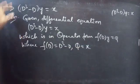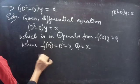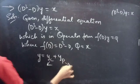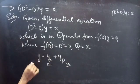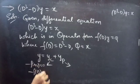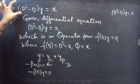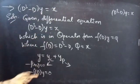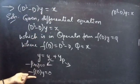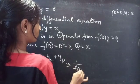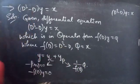We need to find the general solution, given by y = yc + yp, where yc is the complementary function and yp is the particular integral. We find yc using the roots of the auxiliary equation of the homogeneous equation — simply by putting the right-hand side equal to 0 — and we find yp using (1/f(D))·Q.